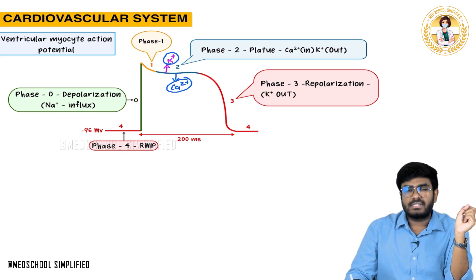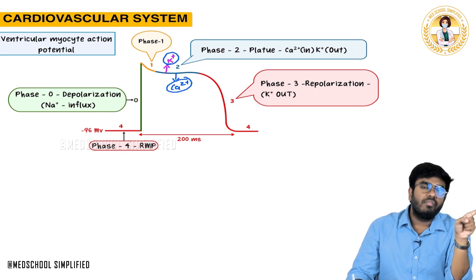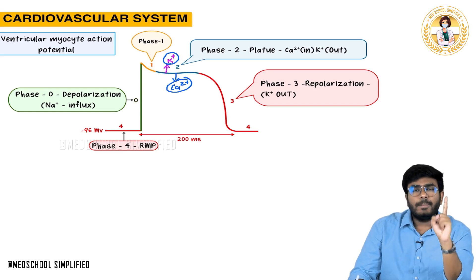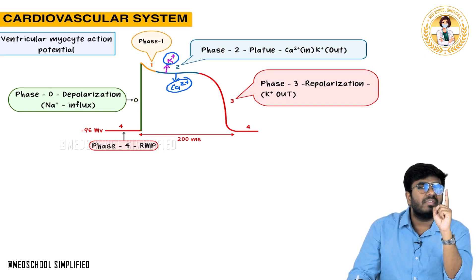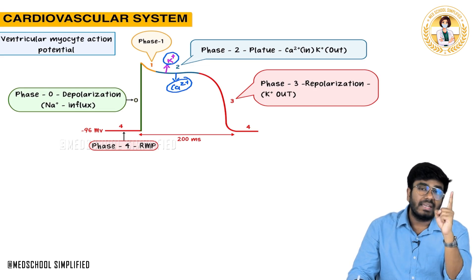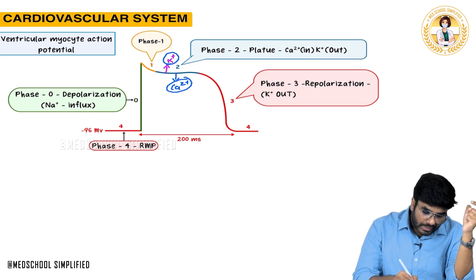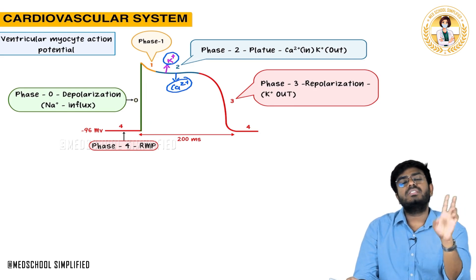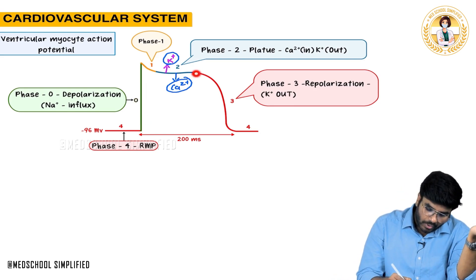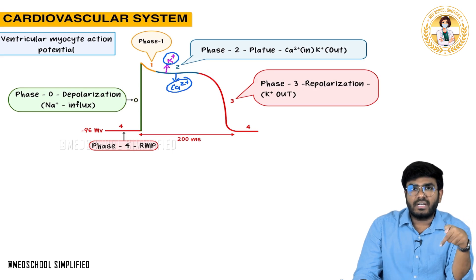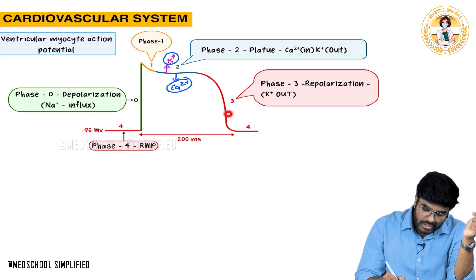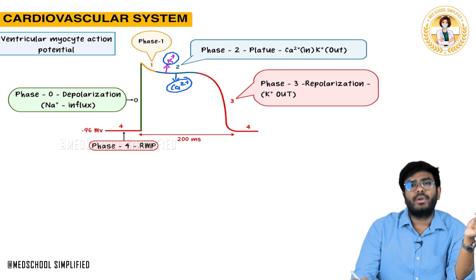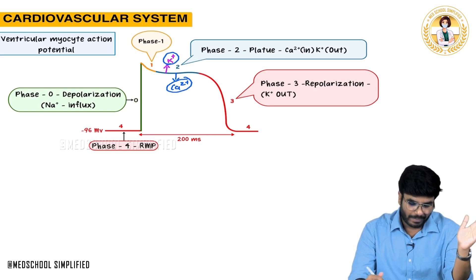Now, the kind of questions that will come in your exam: in the SA node, depolarization is calcium dependent — due to influx of calcium. But in the ventricular myocyte, depolarization is dependent on the influx of sodium. In both the SA node and the ventricular myocyte, repolarization is due to efflux of potassium.